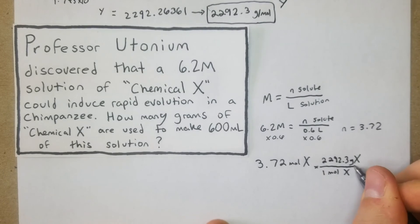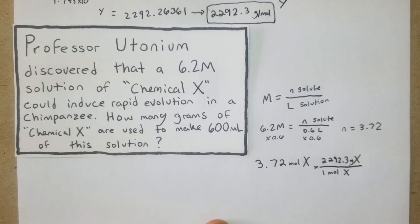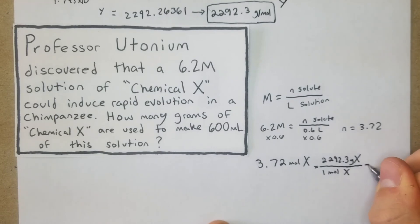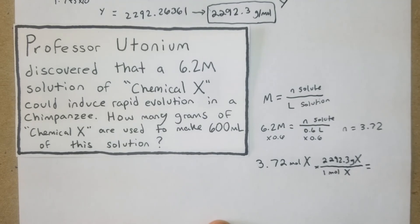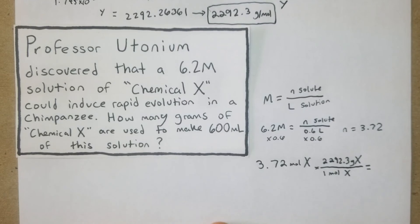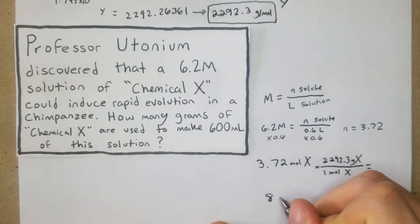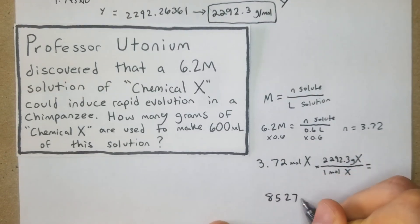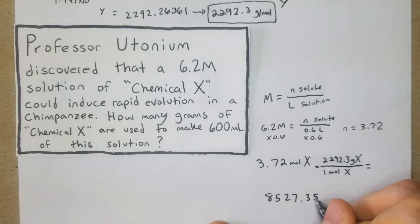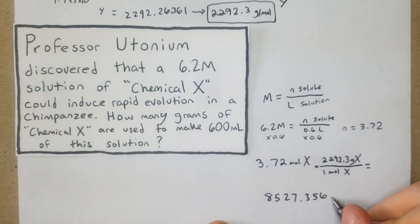So we have 3.72 times 2292.3. All right, so we're going to get 8527.356, and that's going to be grams.